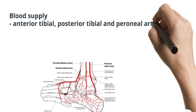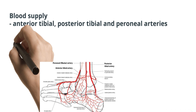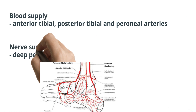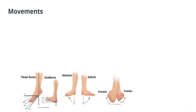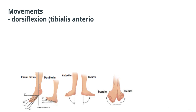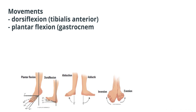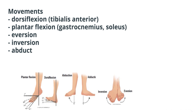The blood supply to the ankle joint is mainly from the anterior tibial, posterior tibial, and peroneal arteries. The innervation is from the deep peroneal and tibial nerves. The movements include dorsiflexion, mainly by the tibialis anterior muscle, and plantar flexion by the gastrocnemius and soleus muscles.